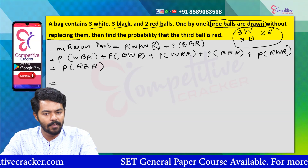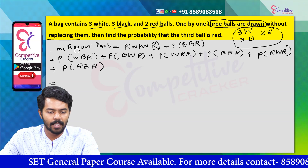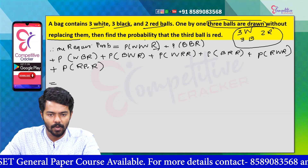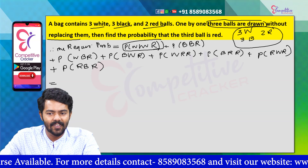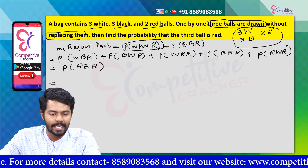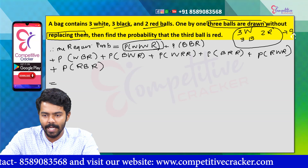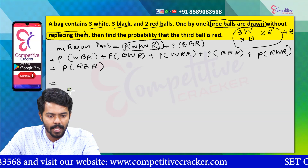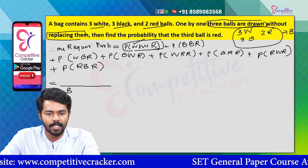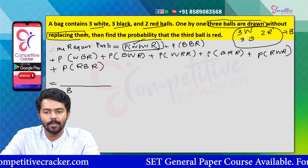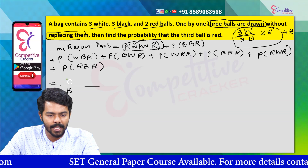You can say that you are able to get the total probability. Then we have one chance, and the second chance is P of probability of WWR. This is called without replacing. So, what is it? It's very easy. How many balls are in the bag? He picked up called 3 by 8.